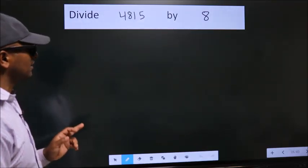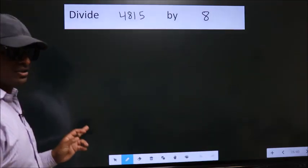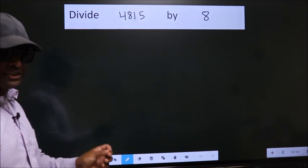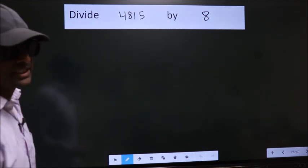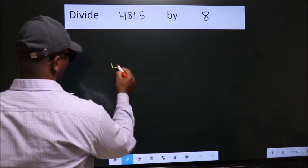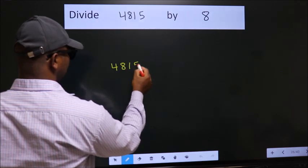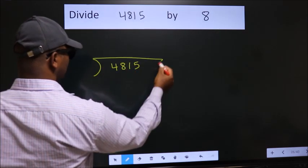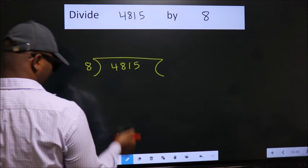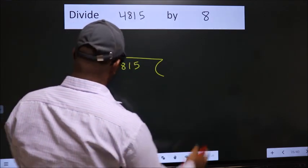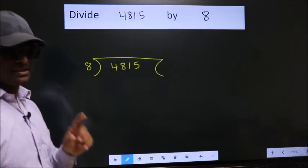Divide 4815 by 8. To do this division, we should frame it in this way. 4815 here, 8 here. This is your step 1.